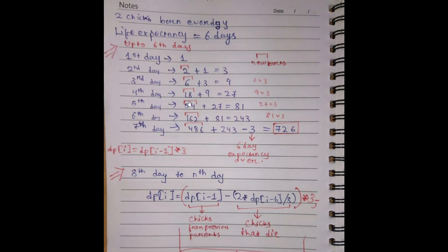Similarly, on the fifth day it will be 81, and on the sixth day it will be 243. But the catch starts on the seventh day.